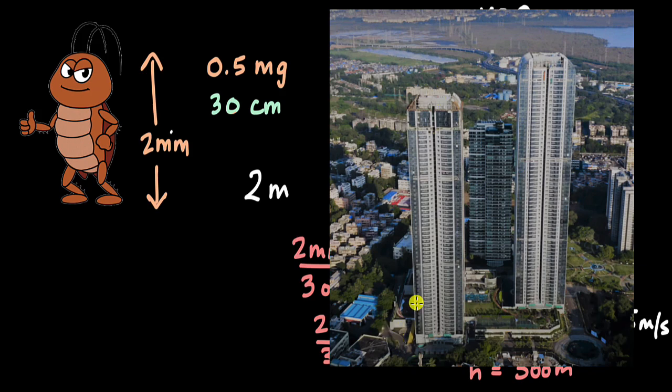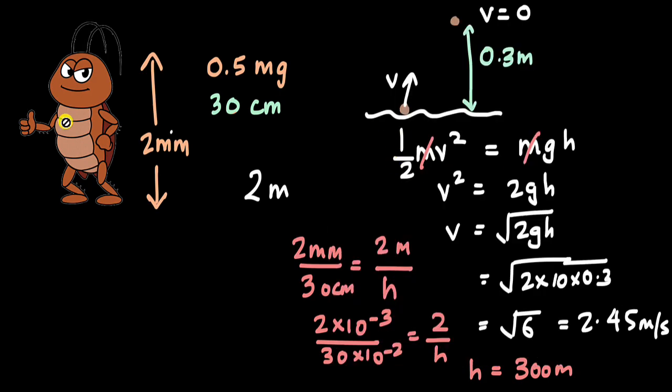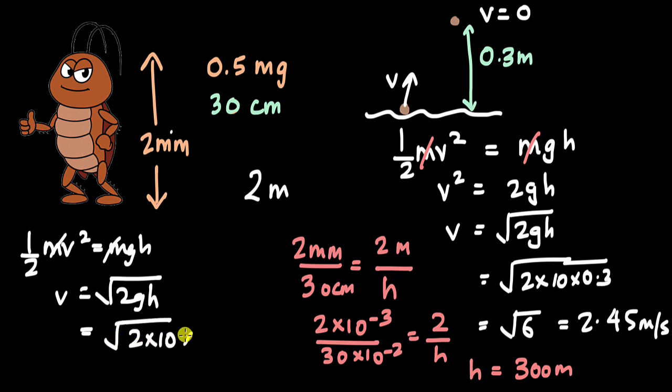And if we try and understand the velocity with which a human should jump to be able to reach that height, we can again apply conservation of energy principle. We can write half mv square equals to mgh. Again m gets cancelled off and v is under root of 2gh, but h here is 300 meters. So this is 2 into 10 into 300, under root of 6000, and this is 77.4 meters per second.